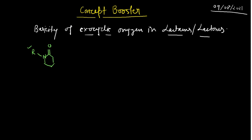You may write another lactam — say you have a species with a double bond and nitrogen connected to it. You can also have a 4-membered ring with the carbonyl functionality and the R group at that position. This series is called the lactam series.